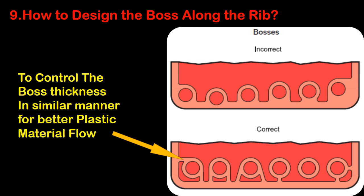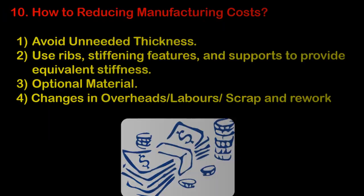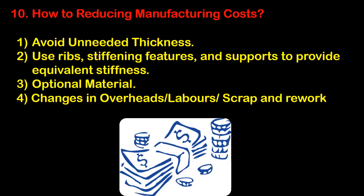Question number nine: how to design the boss along with a rib? As per the given figure, there are multiple types of boss designs with continuous thickness. Extra thickness needs to be avoided for a better molding process.